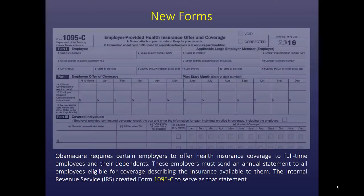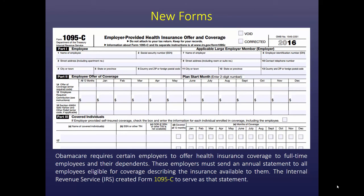Obamacare requires certain employers to offer health insurance coverage to full-time employees and their dependents. These employers must send an annual statement to all employees eligible for coverage describing the insurance that's available to them, and the IRS created Form 1095-C to serve as that statement. We don't attach this to the tax return — this is kept for clients' records. This is the employer-provided health insurance offer and coverage form.